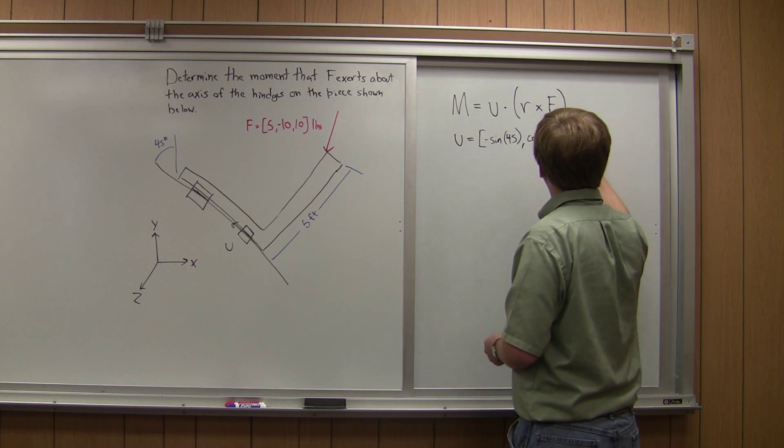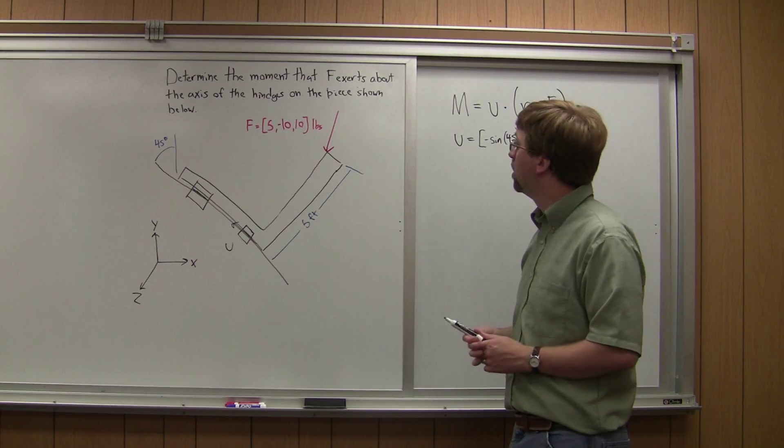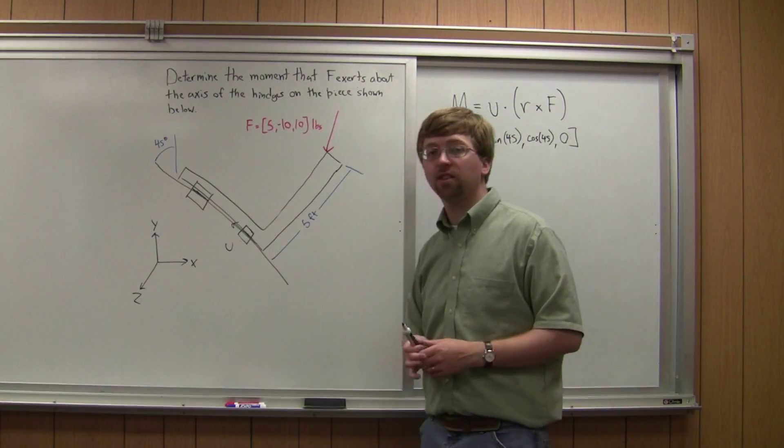And in the z direction it's going nowhere. So it has no component in the z direction there. So that is showing what axis we're looking at.